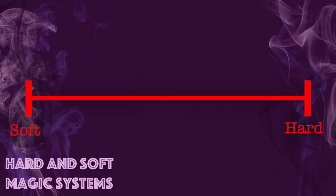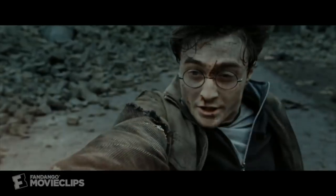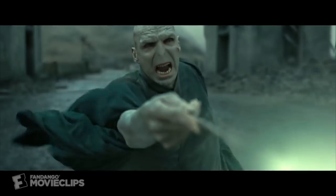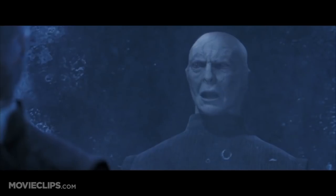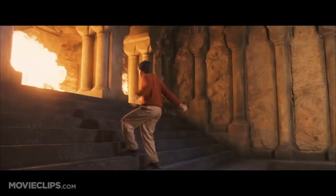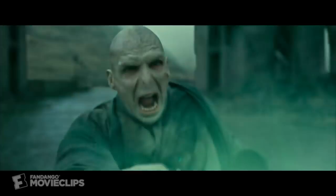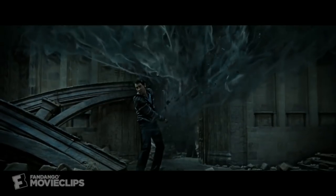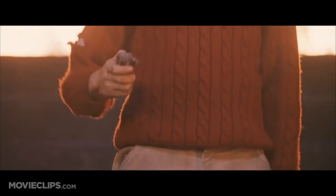Hard and soft magic is a scale — it's not absolute and systems can fall somewhere in between. Harry Potter is a good example of this, because we understand some of the rules of magic, especially those used by the protagonist, but we also get a sense of greater magic existing in the world. New laws and rules are introduced as the books progress, often serving to resolve or create conflict, and it feels justified because the kids are learning these rules and spells at school, and they rarely contradict what we already know is possible with magic.